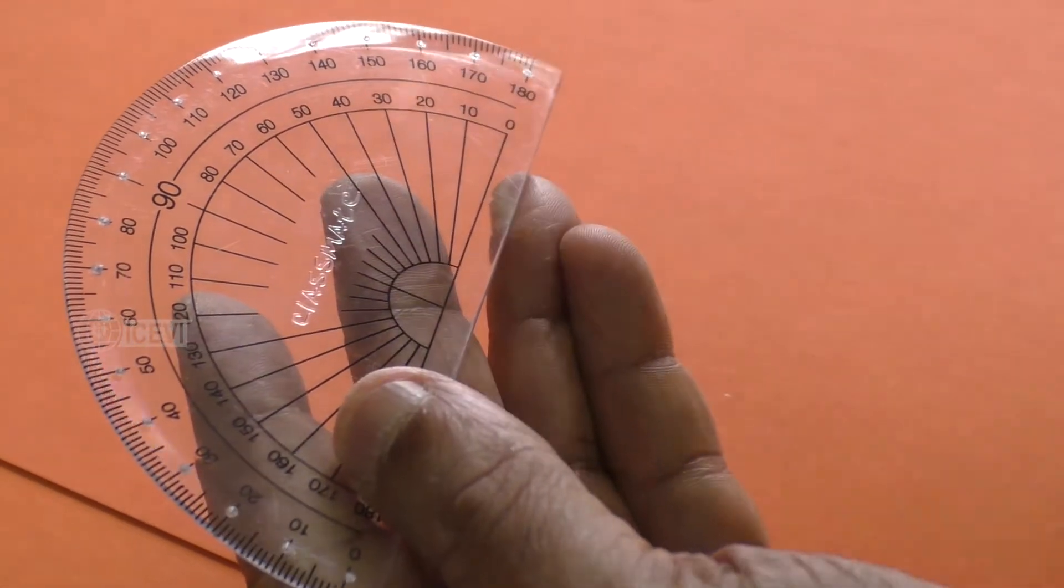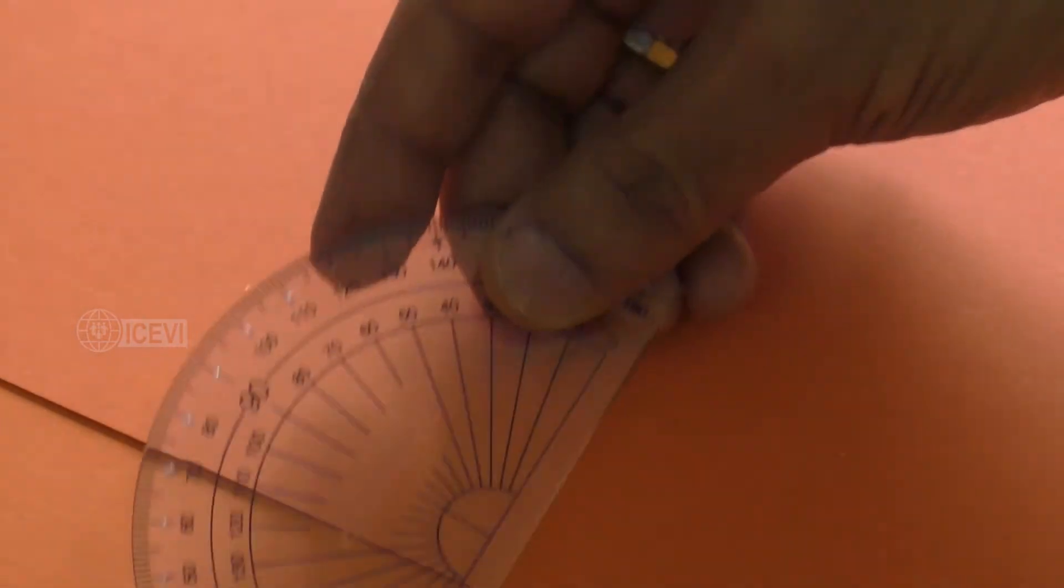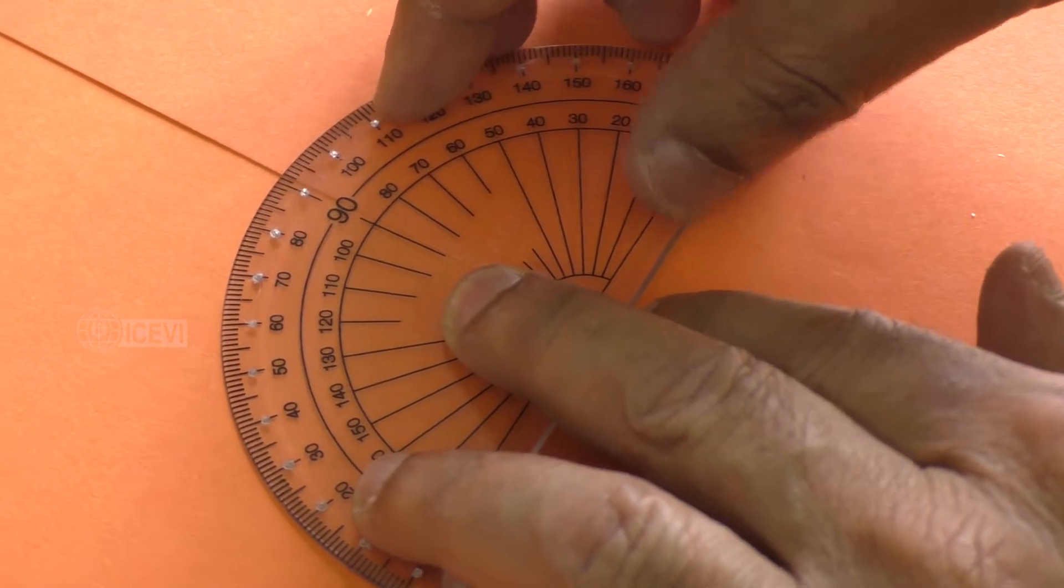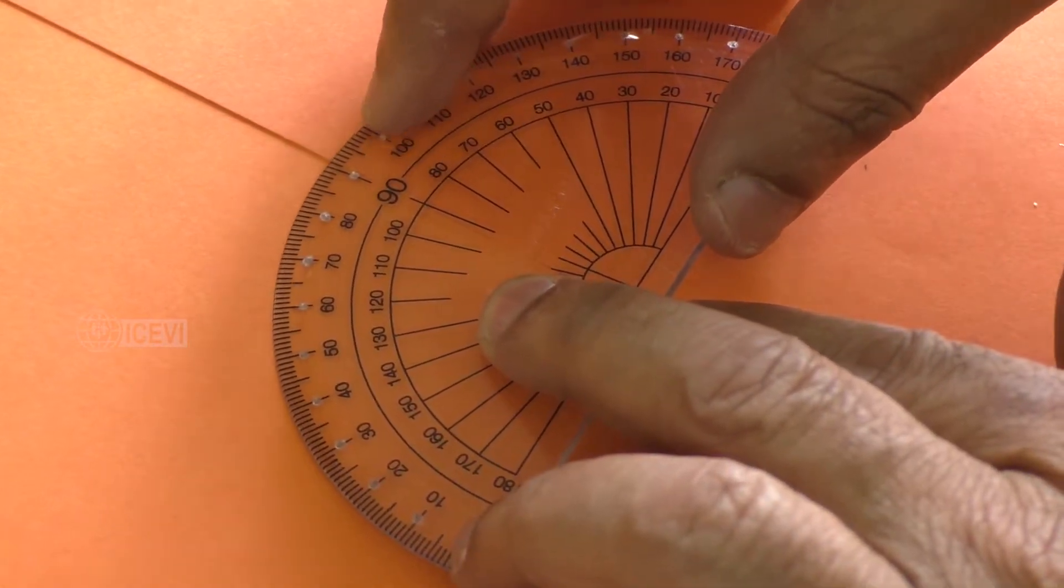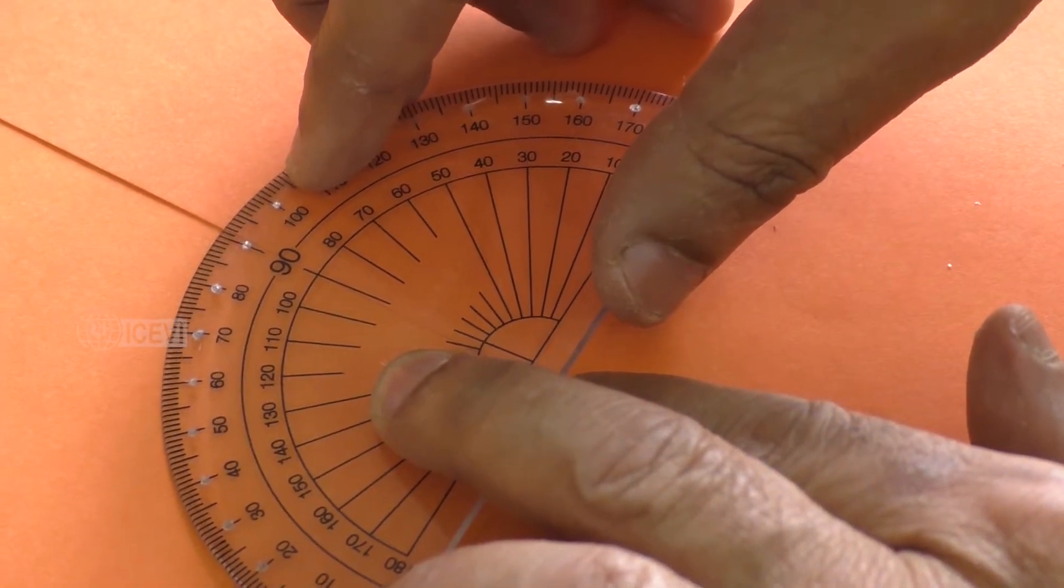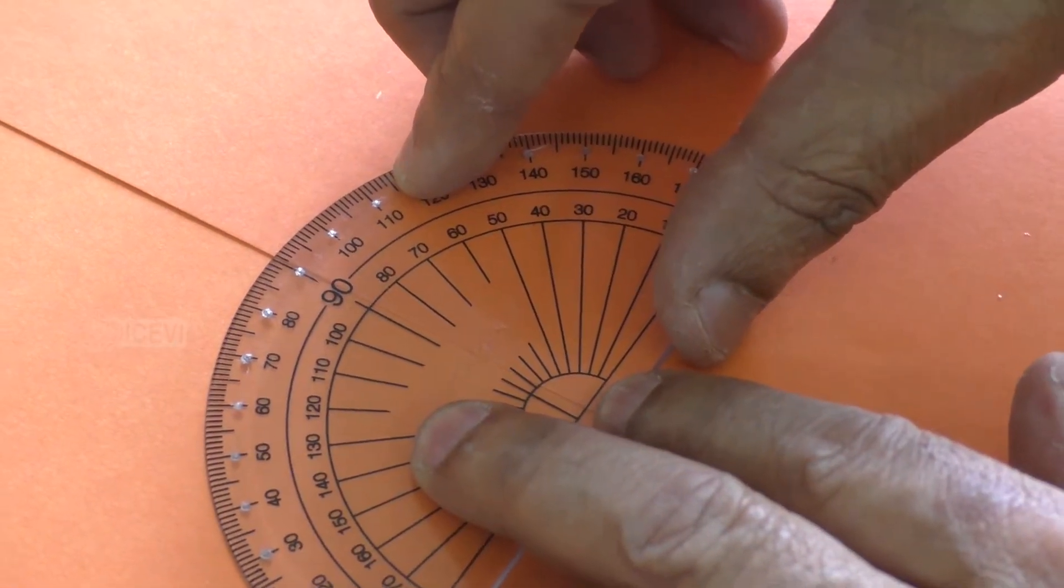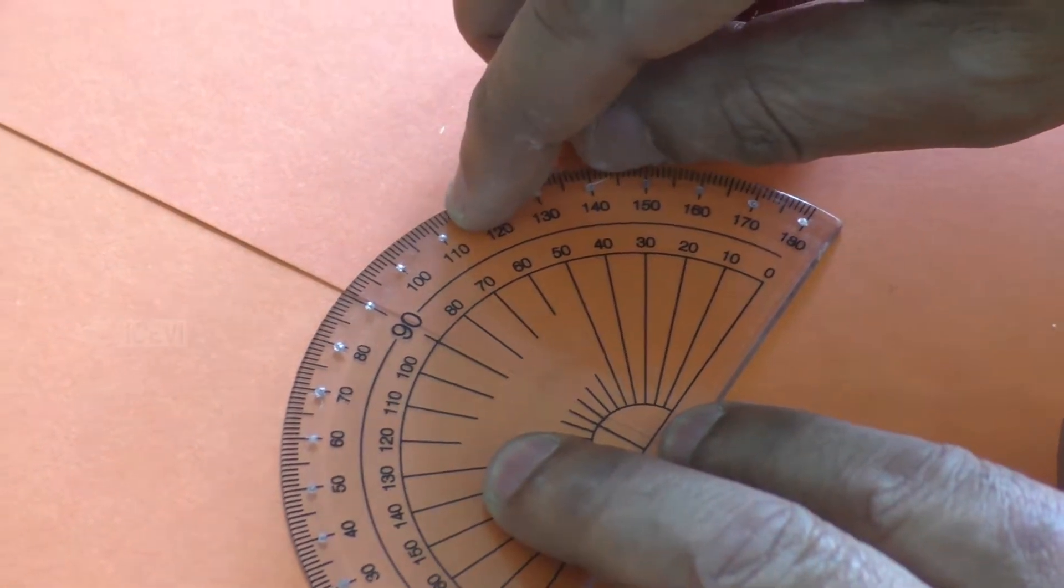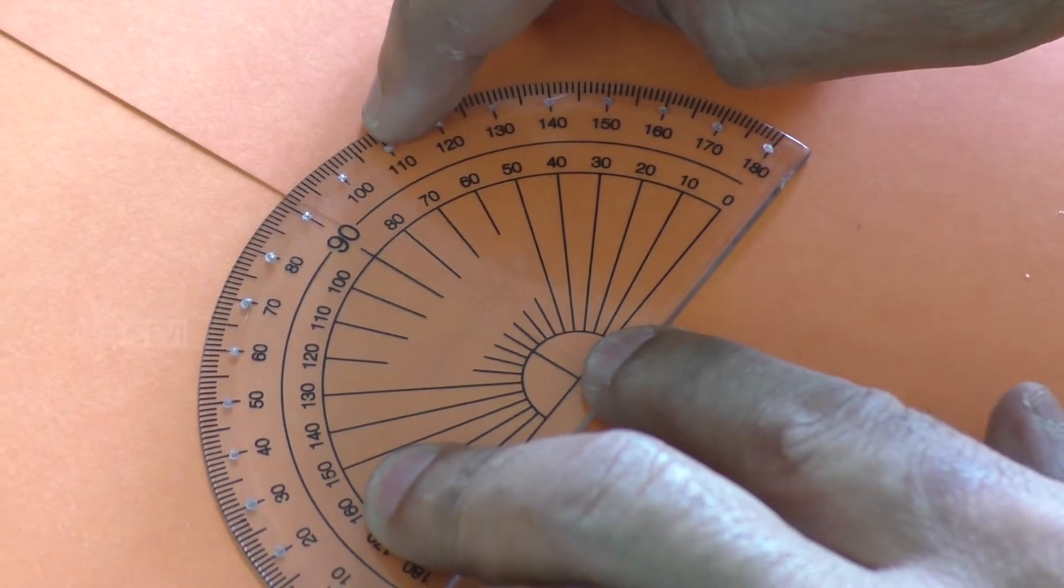Suppose you ask the child to measure angle 115. The child will understand, okay, so 90 and then 100 and 110, so 115 is somewhere between 110 and 120. The child will be able to point out this as 115. If you draw a line and ask the child to measure 115, the child will get an approximate angle of 115.